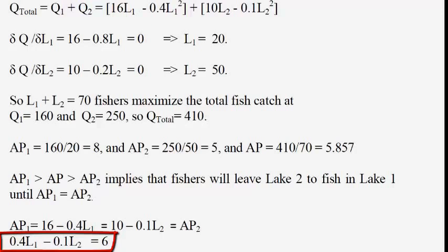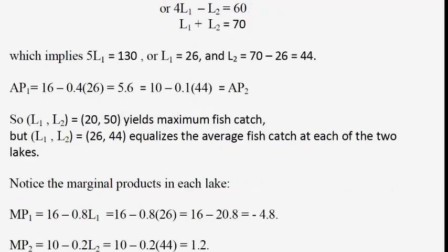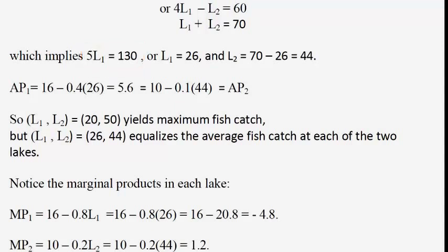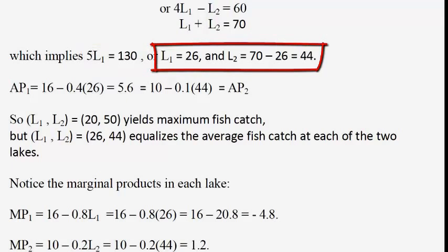To simplify, we multiply the equation by 10 to get 4L1 minus L2 equals 60. We also know there are 70 fisher persons total, giving the constraint L1 plus L2 equals 70. We are determining how 70 fishers should allocate themselves to equalize average fish catch at both lakes. Summing the two equations eliminates L2, giving 5L1 equals 130, so L1 equals 26. Since there are 70 fishers total, L2 equals 44. So six individuals leave lake 2 and join lake 1 until average products are equalized.